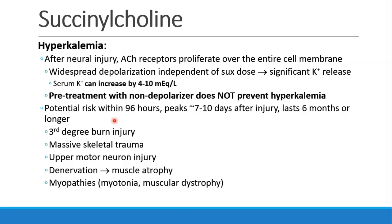Patients who have a neural injury will have a proliferation of acetylcholine receptors over the entire cell membrane. When they receive succinylcholine, there is widespread depolarization regardless of dose, with a massive release of potassium — it can increase by 4 to 10 mEq/L, which can be fatal. Giving a defasciculating dose of non-depolarizer does not prevent this hyperkalemia. This risk starts within about 96 hours after neural injury, peaks 7 to 10 days out, and can last up to 6 months or longer.